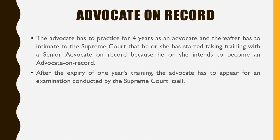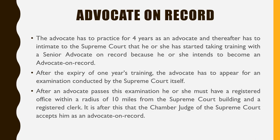The advocate has to practice for four years and then intimate to the Supreme Court that he or she has started training with a senior advocate on record. After the expiry of one year's training, the advocate has to appear for an examination conducted by the Supreme Court. After passing this examination, he or she must have a registered office within a radius of 10 miles from the Supreme Court building and a registered clerk. It is after this that the chamber judge of the Supreme Court accepts him as an advocate on record.